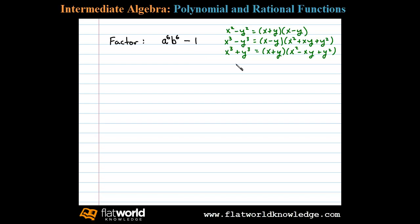And so the formulas that will need to factor this are right here. Now when a binomial is both a difference of squares and a difference of cubes, we know we obtain a more complete factorization if we apply difference of squares first.